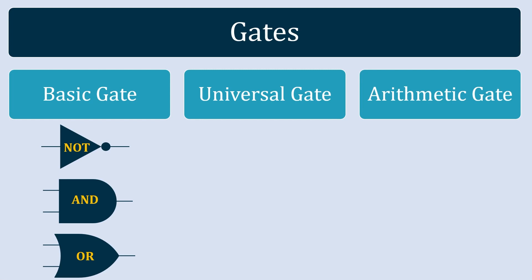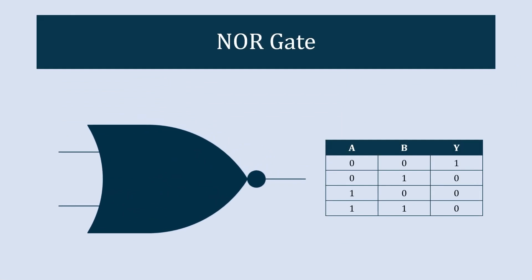The next category is universal gates. The first gate in universal gates is the NOR gate. The symbolic representation of the NOR gate is a curved shape with inputs on the left and the output with a circle on the right.